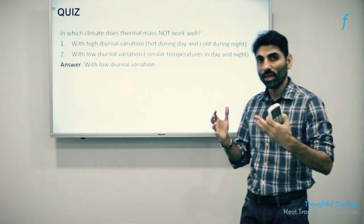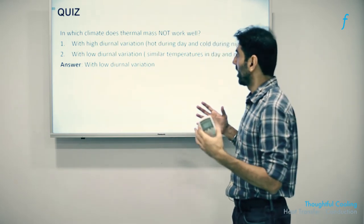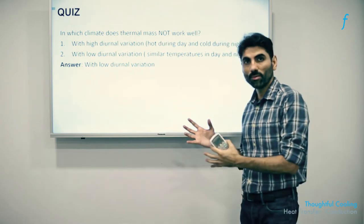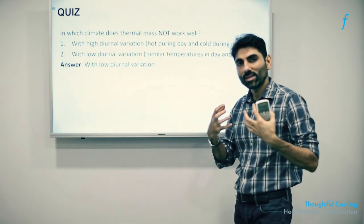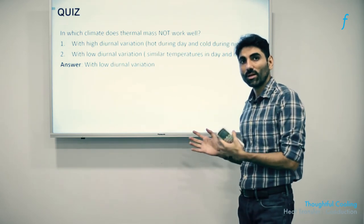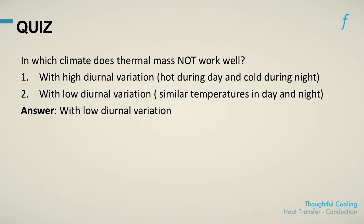What this leads to is that the heat from the walls needs to find some outlet. It finds that if the interiors are at a lower temperature than the wall, all the heat that has been stored now starts acting as a source of radiant heat for the occupants inside, creating adverse conditions and not leading to thermal comfort. Therefore, thermal mass is not a good strategy to use in places with high humidity and low diurnal variation.